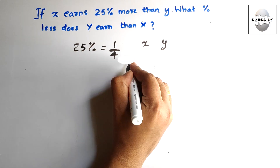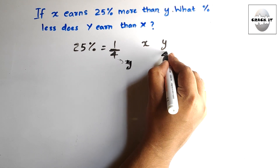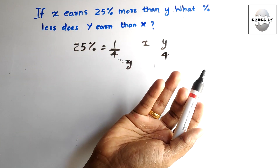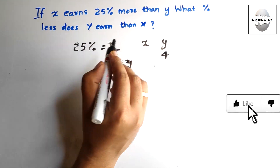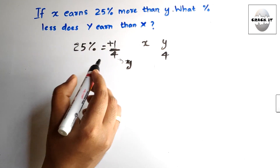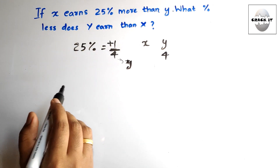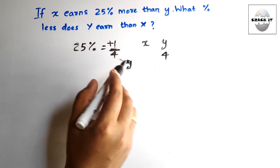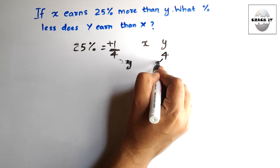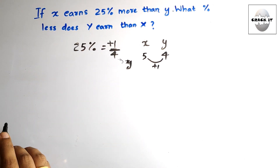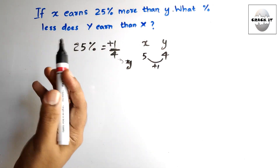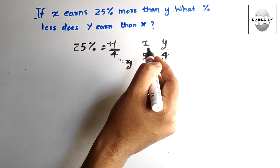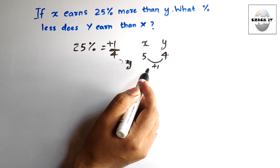Let's suppose Y is our base value. X earns 25% more than Y — since it is 'more than', we add 1. So if Y is earning 4, X is earning 5 (25% more than Y means plus 1, giving 5). The question asks: what percentage less does Y earn than X? The difference between X and Y in these terms is 1.